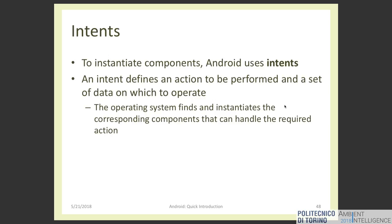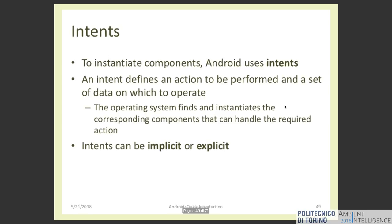An intent defines an action to be performed and a set of data on which to operate. Intents can be implicit or explicit. With explicit intents we can refer to specific components — for example, 'I want to open the activity for the login phase' or 'I want to use the service I developed for monitoring my WiFi connection.' With implicit intents, instead, we only specify the type of action we are interested in, and Android will select one or more components to execute this action.